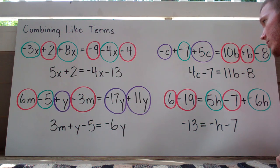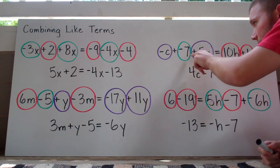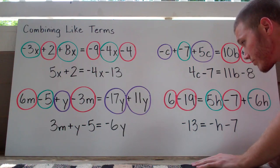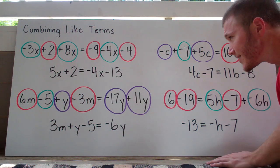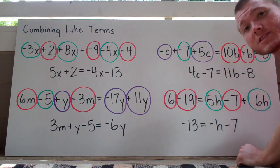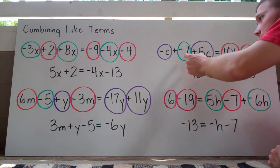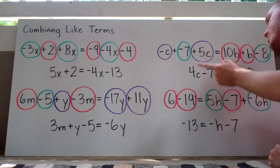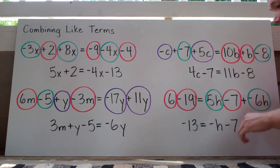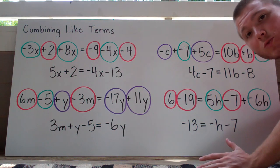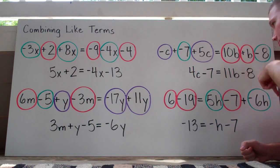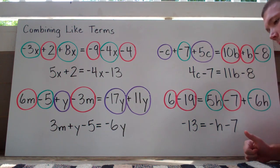Next: negative c plus negative 7 plus 5c equals 10b plus b minus 8. When I circle the term and the sign to the left of it, I circle the 7 and the negative sign — so that plus sign in front of the negative doesn't matter. Combining negative c and positive 5c gives us 4c, and we bring down minus 7. On the right side, 10b plus b — remember, if there's no number next to a variable, it's just 1 — so 10b plus 1b is 11b, and minus 8 drops down.